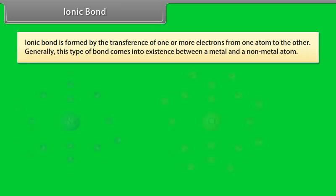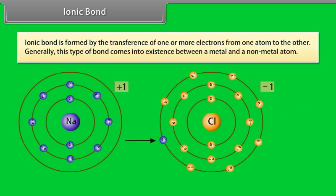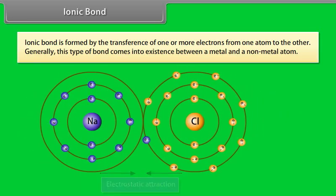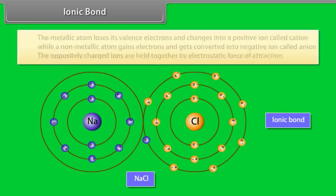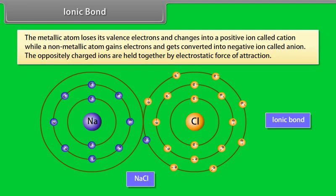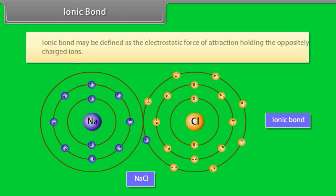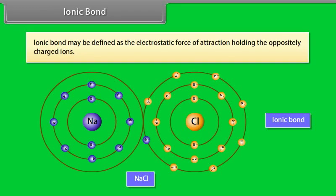Ionic bond is formed by the transference of one or more electrons from one atom to the other. Generally, this type of bond comes into existence between a metal and a non-metal atom. The metallic atom loses its valency electrons and changes into a positive ion called cation, while a non-metallic atom gains electrons and gets converted into a negative ion called anion. The oppositely charged ions are held together by electrostatic force of attraction. Ionic bond may be defined as the electrostatic force of attraction holding the oppositely charged ions.